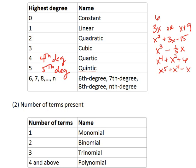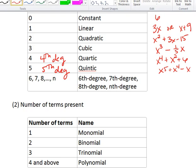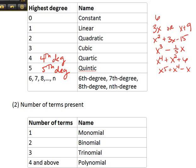What matters in all of these is the highest degree. So here is an implied zero degree. We have a first degree, second degree, third degree, fourth degree, fifth degree.